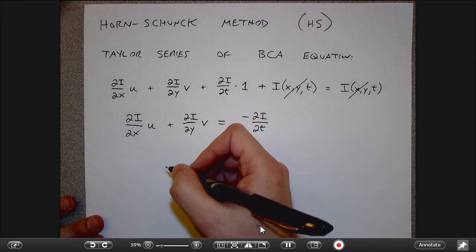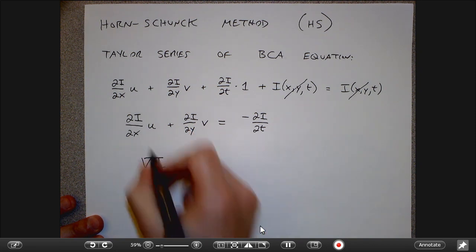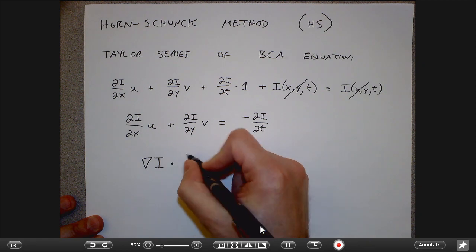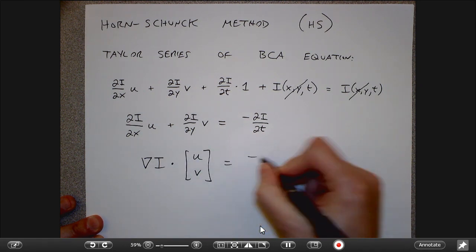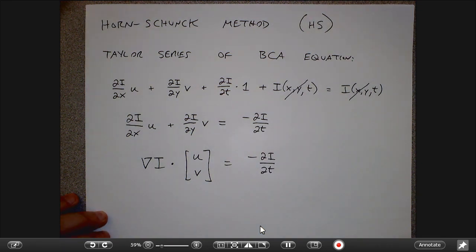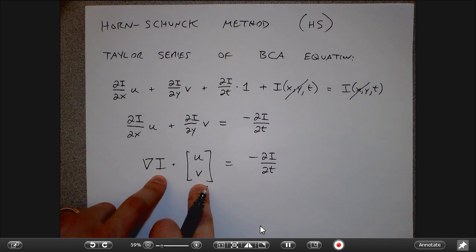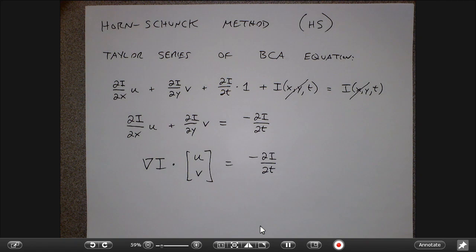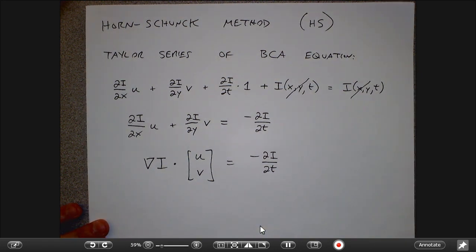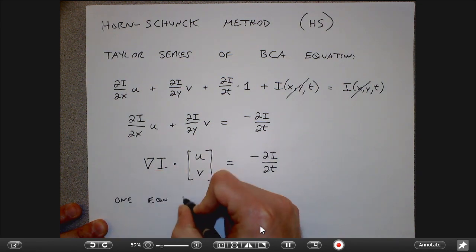What we get involves the gradients of the image in both space and time. Specifically, the gradient of I — the vector of partial derivatives (dI/dx, dI/dy) — dotted with the flow vector (u, v) equals −dI/dt. At every pixel, this is one constraint: I know what the flow vector should be when projected onto the gradient direction. But this is one equation in two unknowns u and v, giving an underconstrained system.